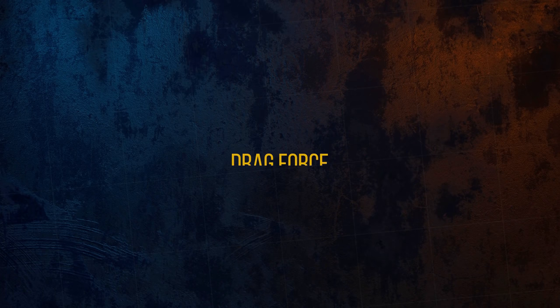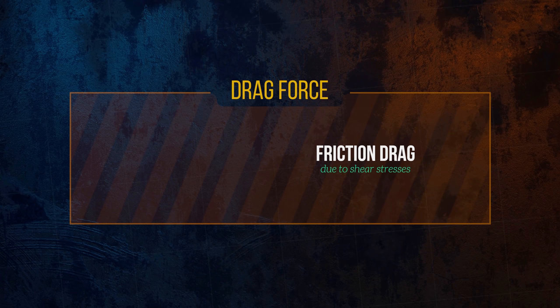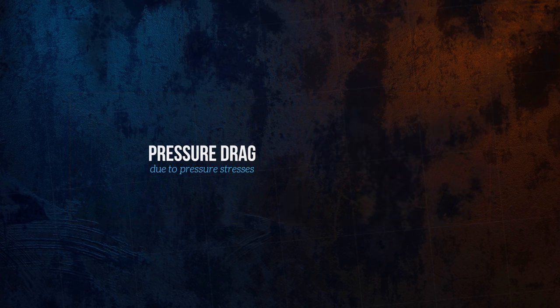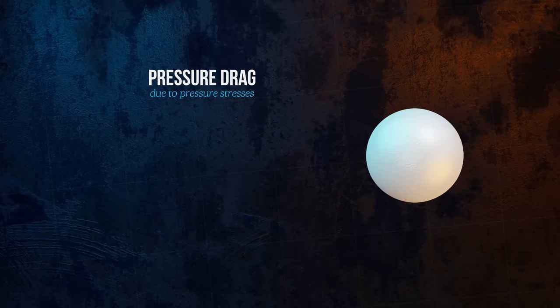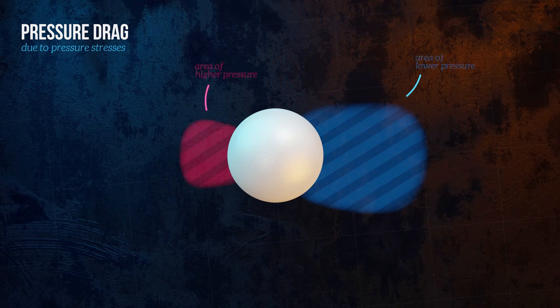The component of drag caused by the shear stresses is called friction drag, and the component caused by the pressure stresses is called pressure drag, or form drag. Pressure drag is most significant for blunt bodies, like this sphere. It is essentially caused by a difference in pressure between the front and rear of an object.